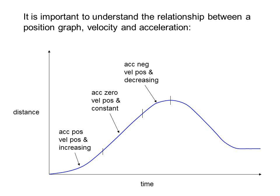Here the acceleration is negative. Notice that the graph is concave down. Velocity is positive, that is the slope is still positive, but decreasing. Right at the top, the slope is zero, so the velocity is zero.